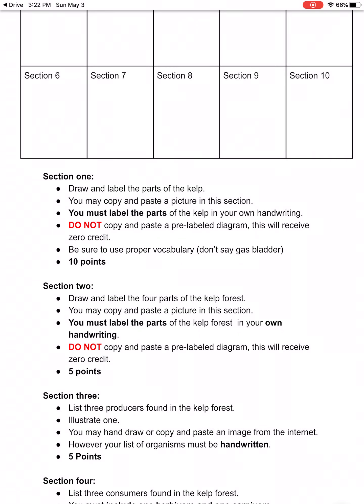Section three: list three producers found in the kelp forest, then you're going to draw one. You can either draw one or copy and paste a picture of one of them. Your list of organisms has to be handwritten.